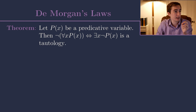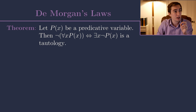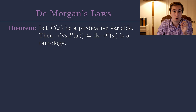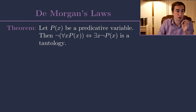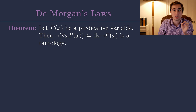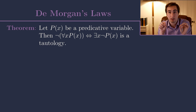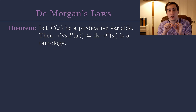De Morgan's law effectively says that if we've got P(x) as a predicative variable, then the negation of 'for all x, P(x)' is equivalent to 'there exists an x such that not P(x)'. So we're trying to prove that these two propositional variables are in fact equivalent.